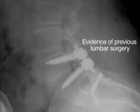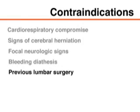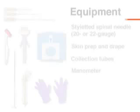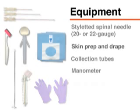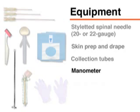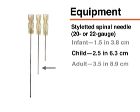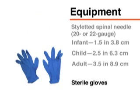Patients who have previously undergone lumbar surgery should be referred to an interventional radiologist. Before performing the lumbar puncture, you will need a commercially available tray containing the necessary supplies, a spinal needle with a stylet, equipment for skin preparation, drapes, collection tubes, and in some cases a manometer. Typically, a 20 to 22 gauge needle is used, with the length ranging from 1.5 inches or 3.8 centimeters for infants to 2.5 inches or 6.3 centimeters for children, and 3.5 inches or 8.9 centimeters for adults. You will also need sterile gloves.